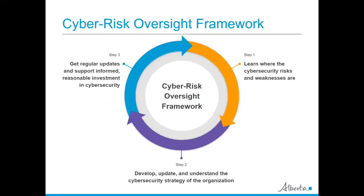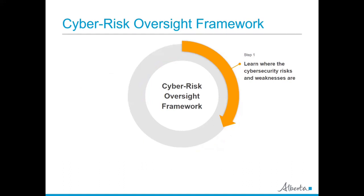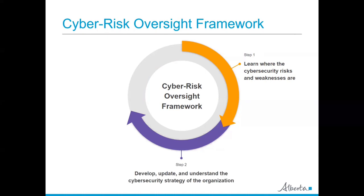The board should take three main steps to ensure it is exercising proper cybersecurity oversight. We created a graphic based on these three steps called the Cyber Risk Oversight Framework. The first step is to learn where the cybersecurity risks and weaknesses are. In other words, the board should understand what and where the nonprofit's cybersecurity weaknesses and risks are, and consider what steps can be taken to reduce the possibility of a breach.